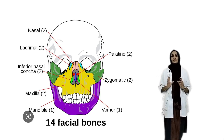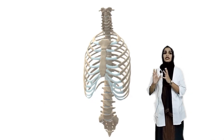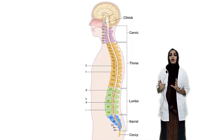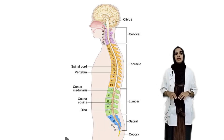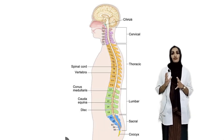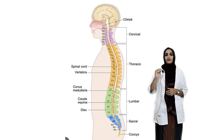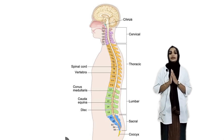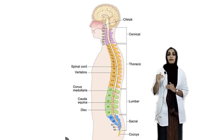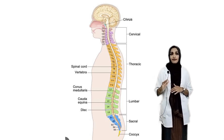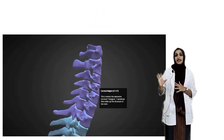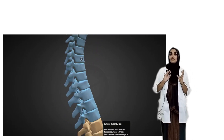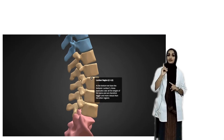Coming to the vertebral column, also known as the backbone. It forms an S-shape and consists of 33 vertebrae. The vertebral column is divided into five regions: cervical vertebrae with seven bones, thoracic vertebrae with twelve bones, lumbar vertebrae with five bones, sacral bones with five in number, and coccygeal vertebrae with four in number. The five sacral vertebrae are united to form one bone.